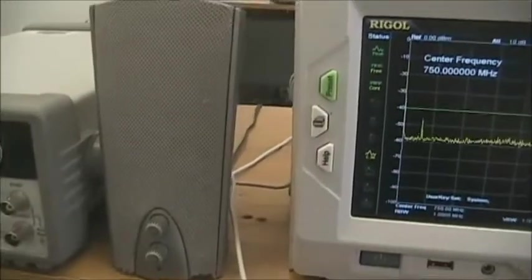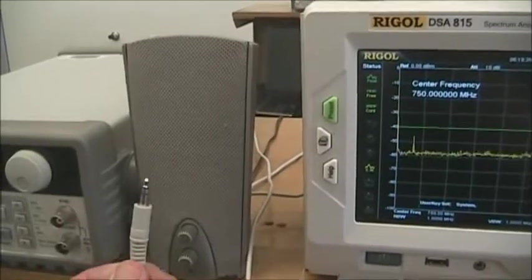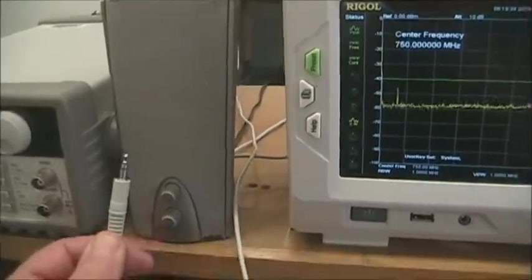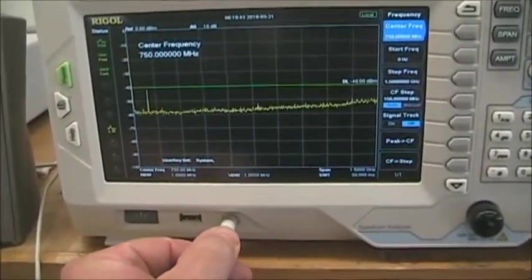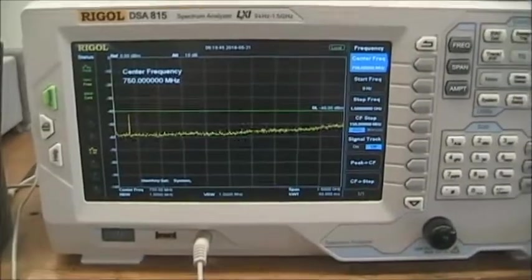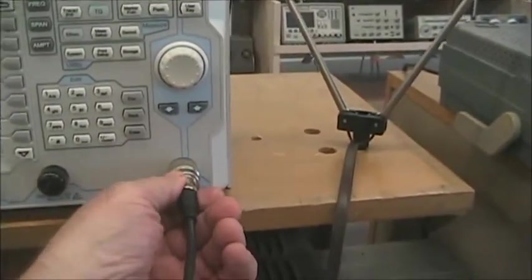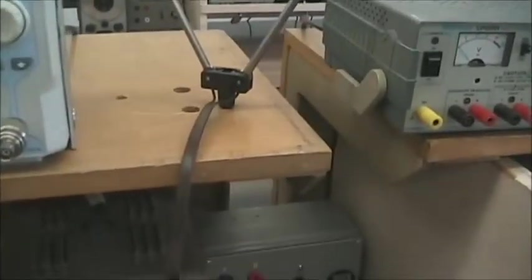The second thing we have to do is we have to have a speaker output. So we take the output, the 3.5 millimeter stereo jack out of this speaker, plug it into the headphone input to the spectrum analyzer. Now I'm going to change my antenna on my spectrum analyzer from this test lead to a little bit more formal FM antenna.